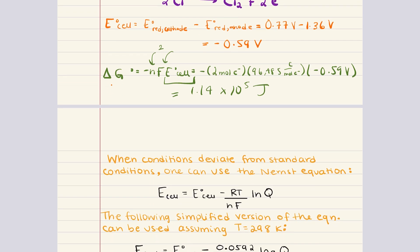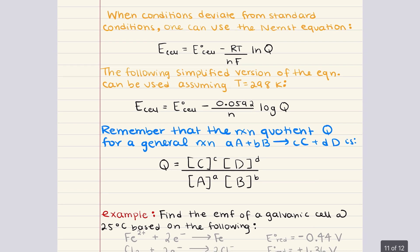The next thing we want to talk about is the Nernst equation. The Nernst equation is a crucial tool for understanding how the electromotive force — the EMF of an electrochemical cell — changes with varying conditions, particularly when the concentrations of the ionic species deviate from the standard state of 1 molar. The standard equation for EMF assumes standard conditions: 298 Kelvin, 1 atmosphere pressure, and 1 molar concentrations. However, real-world applications often involve conditions that differ from these standards, and the Nernst equation accounts for these deviations and provides a way to calculate the EMF under non-standard conditions.